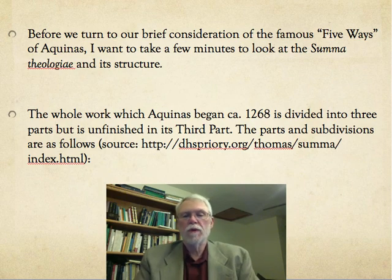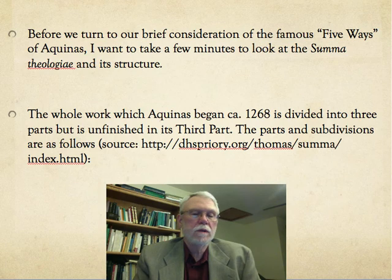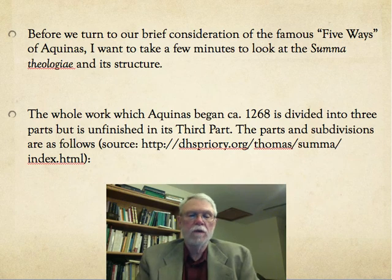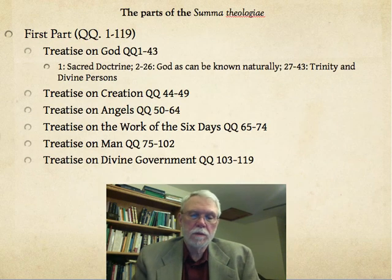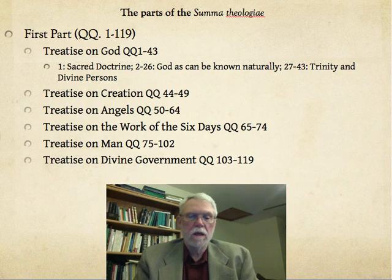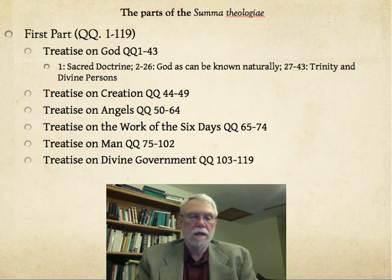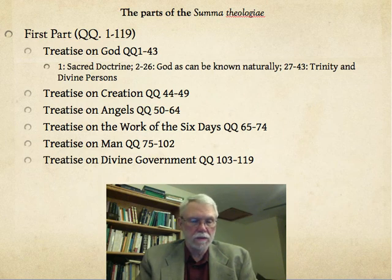Before we turn to our brief consideration of the famous five ways of Aquinas, I want to take a few minutes to look at the Summa Theologiae and its structure. Aquinas began this work in 1268. The work is divided into three major parts but it's unfinished in its third part. The first part consists of 119 questions. The treatise on God concerns first the first question — the issue of sacred doctrine, its nature and human understanding — then questions 2 through 26 concerning God as can be naturally known by human beings, and 27 to 43 concerns Trinity and divine persons — a purely theological account.